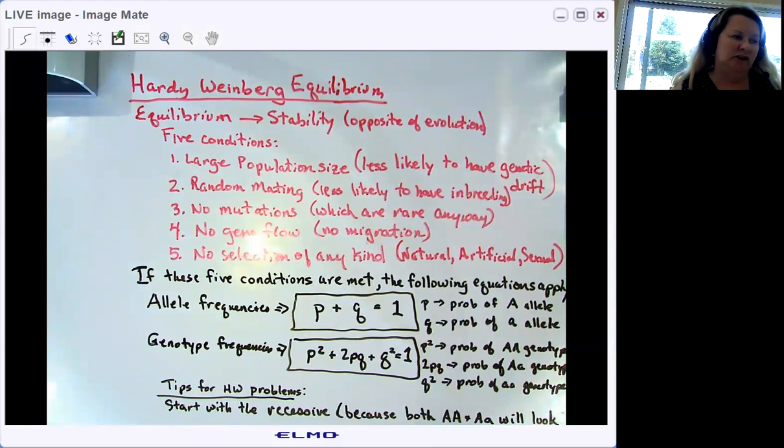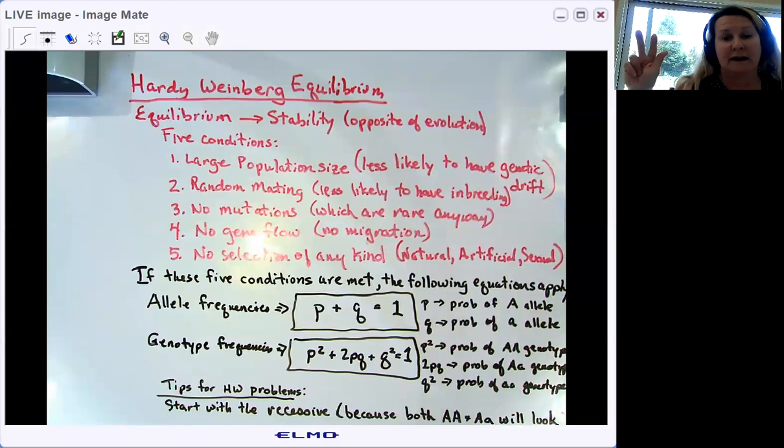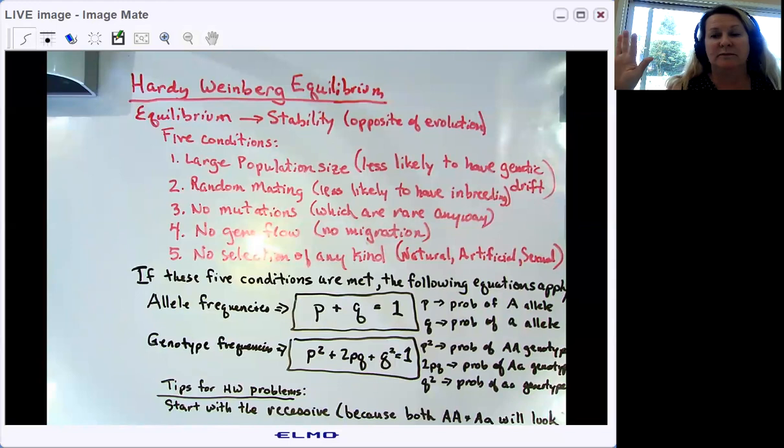Now, for a population to be in Hardy-Weinberg equilibrium, five conditions have to be met. Large population size, that way you're less likely to have genetic drift. Random mating, that way you have less inbreeding. No mutations, and usually mutations are pretty rare anyway. No gene flow or migration, nobody's moving into the population, nobody's moving out. And no selection of any kind, natural, artificial, or sexual selection. No genotype should give an advantage to an individual over a different genotype.